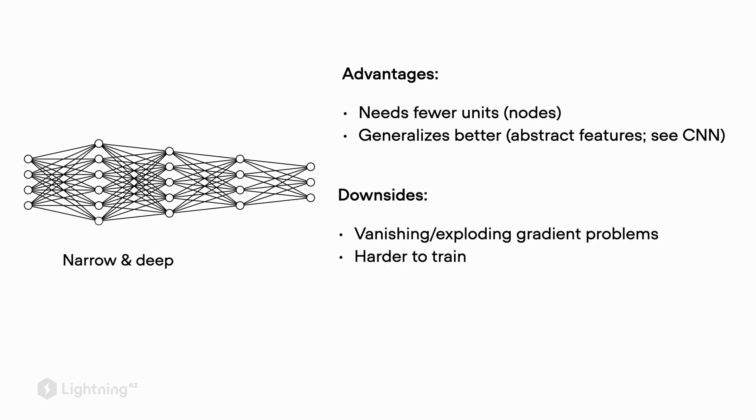However, a disadvantage of a narrow and deep architecture is that it becomes harder to train, because of the vanishing and exploding gradient problems. Throughout this course, we will cover tricks to train narrow and deep neural networks, but it is harder to avoid these gradient problems with deep architectures. As a bottom line: wide and shallow multilayer perceptrons are more prone to overfitting, and narrow and deep neural networks are harder to train. We will learn how to train deep networks and how to reduce overfitting.